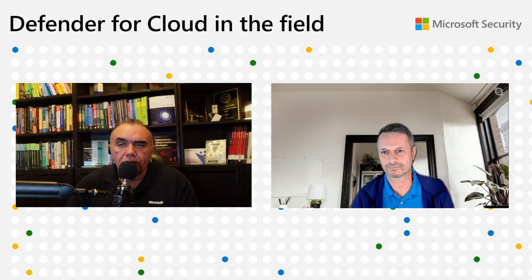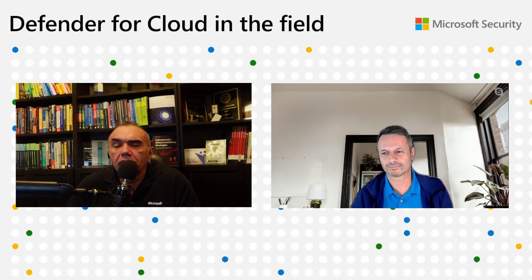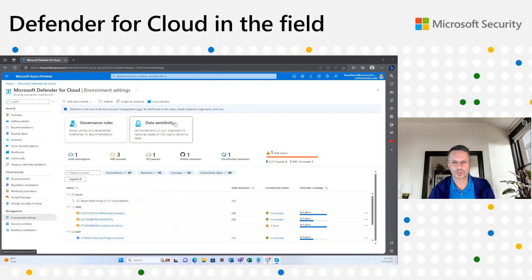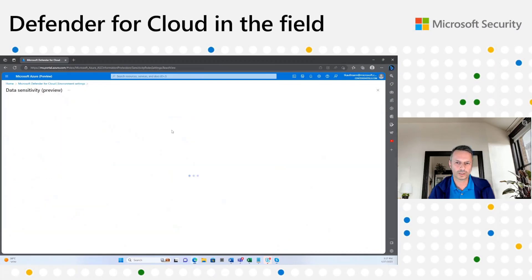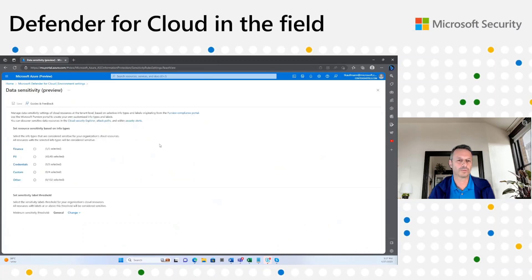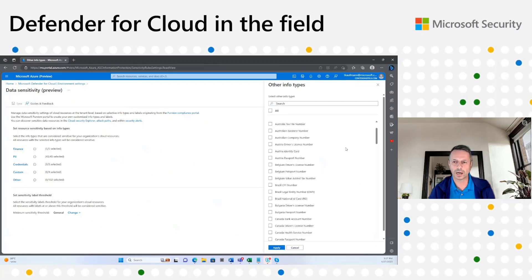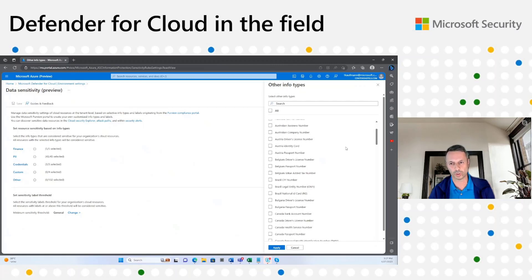Those questions will be answered as you demonstrate the product — let's switch to the demo to show how to enable, onboard, and what the experience looks like. In the demo, we first go over data sensitivity settings. Built-in logic groups are already created — Finance, PII, Credentials, and Other, which covers all 200+ built-in sensitive information types. These groups are available whether or not you have Purview Information Protection.